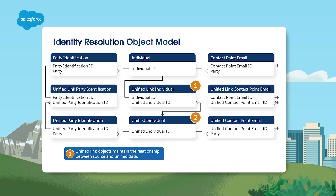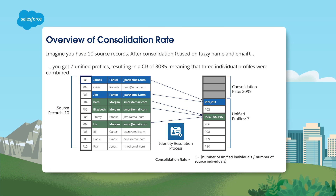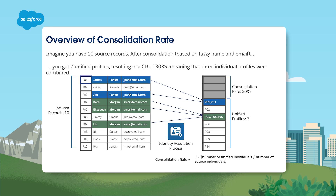You can see that unified link objects establish the relationships between the source data and our unified profile data. There is a statistic called the consolidation rate, or CR. This is a metric that shows how source profiles are grouped to form unified profiles. To calculate it, subtract the number of unified individuals divided by the number of source individuals from one. For example, if you have 10 source records and from those 10 you end up creating 7 unified profiles, the consolidation rate would be 30%. There is no fixed standard or target for consolidation rate, as it depends on industry requirements and your specific data.